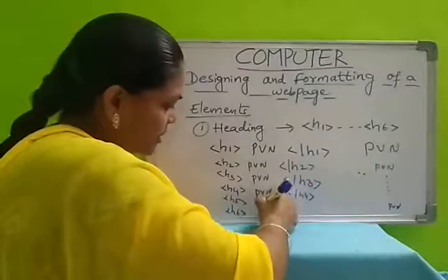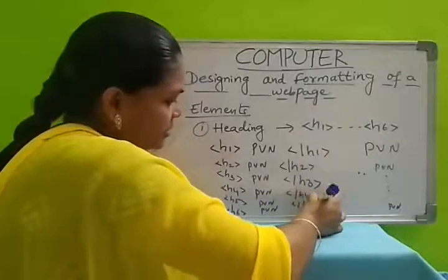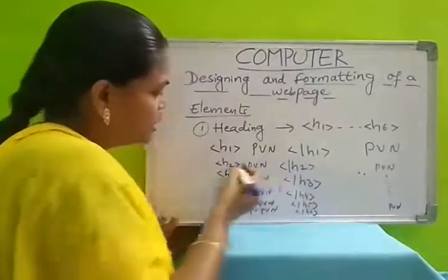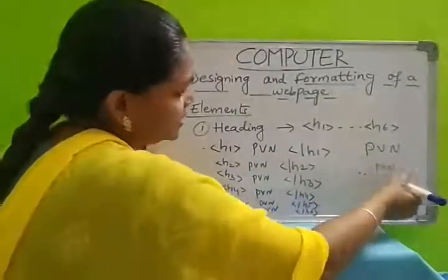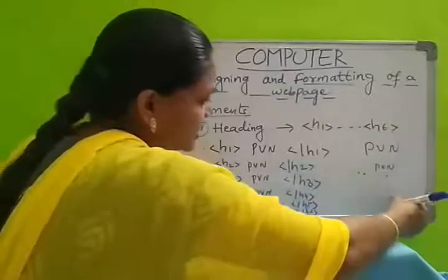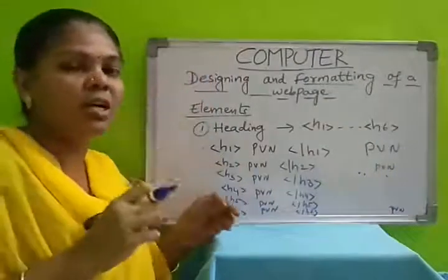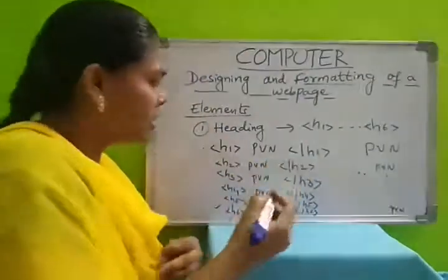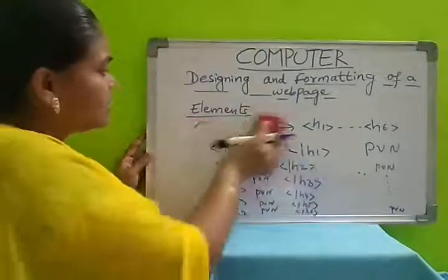Next, we will write the program — we will write our school name with all six tags, H1 to H6. The sizes decrease from large to small letters displayed for H6. That means whatever size you want, you can keep for your text using these heading tags. The first element is heading.